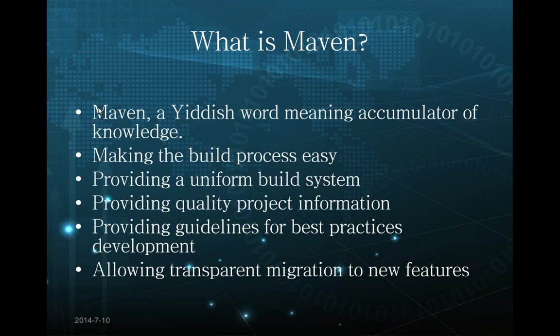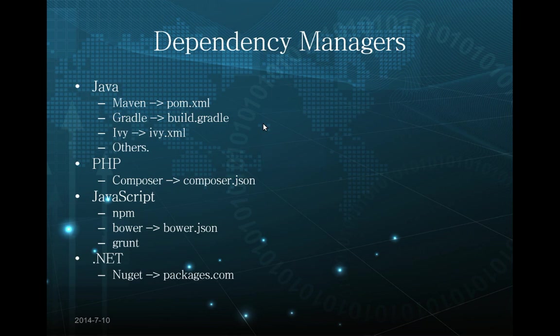Maven came from a Yiddish word which means accumulator of knowledge. Basically Maven does two principal things: the first one is to build a project, and the other is to download the dependencies of the project. It provides a uniform build system, quality project information, guidance for creating a project, and transparent migration — meaning you don't need to manually download a jar or dependency, you just change the version value.